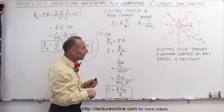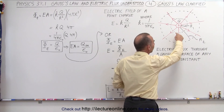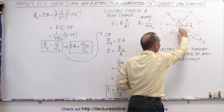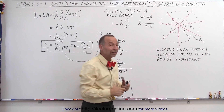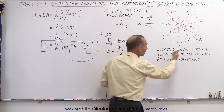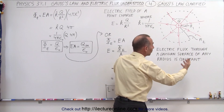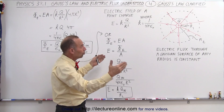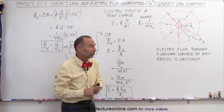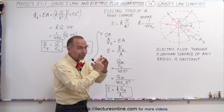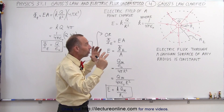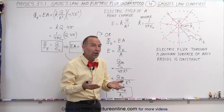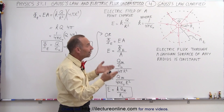We can then define that the electric flux is simply equal to the strength of the electric field anywhere along any of these surfaces, multiplied times the area of the surface. This defines that the electric flux through a Gaussian surface of any radius is therefore constant, because the number of electric field lines does not change no matter how big your Gaussian surface is. The electric flux is simply a product of the electric field strength times the area.